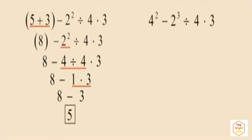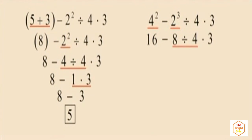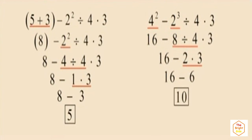This problem has no parentheses, so we go to exponents. Four squared is four times four, which is 16. Two cubed is two times two times two, which is eight. Now we have subtraction, division, and multiplication. Division comes first working left to right: eight divided by four is two. Then multiplication before subtraction: two times three is six. Finally, sixteen subtract six is ten.